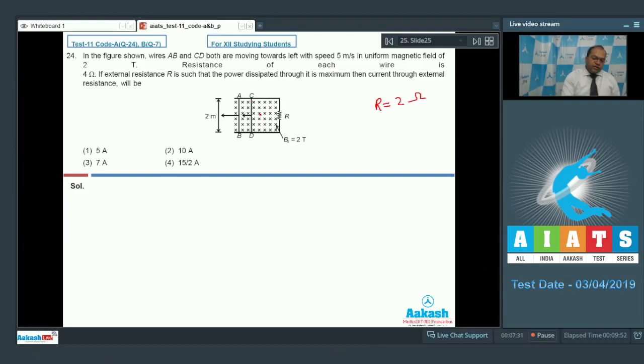And if I calculate the induced EMF in this wire, then the induced EMF is equal to VBL. So V is 5, B is 2 and L is 2. So this comes out to be 20 volt. Now this EMF and this EMF,